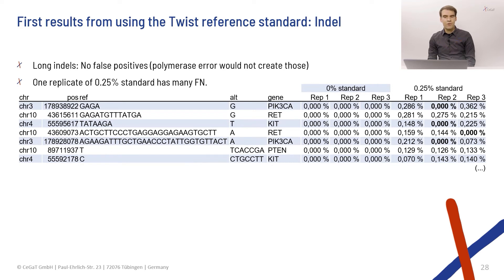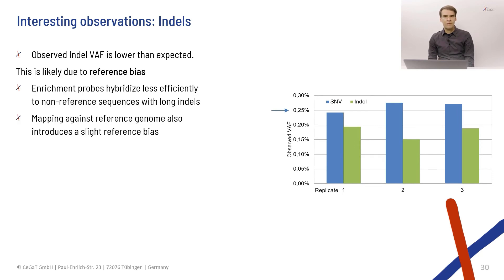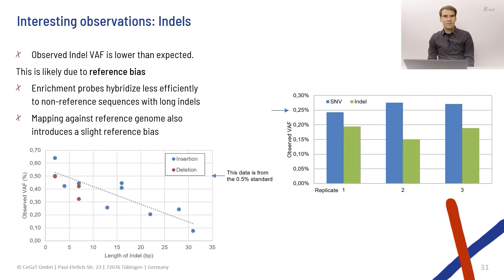One of our three replicates in the 0.25% standard has a lot of false negatives, which is a reproducibility issue we'll have to investigate further. Another interesting finding is that the average allele frequency observed for indels is lower than for SNPs across all replicates — the SNPs are at the expected frequency while indels are lower. Our theory is that this is due to reference bias: the probes used for hybridization-based target enrichment bind less efficiently to DNA molecules containing insertions and deletions, and longer indels are captured even less efficiently.